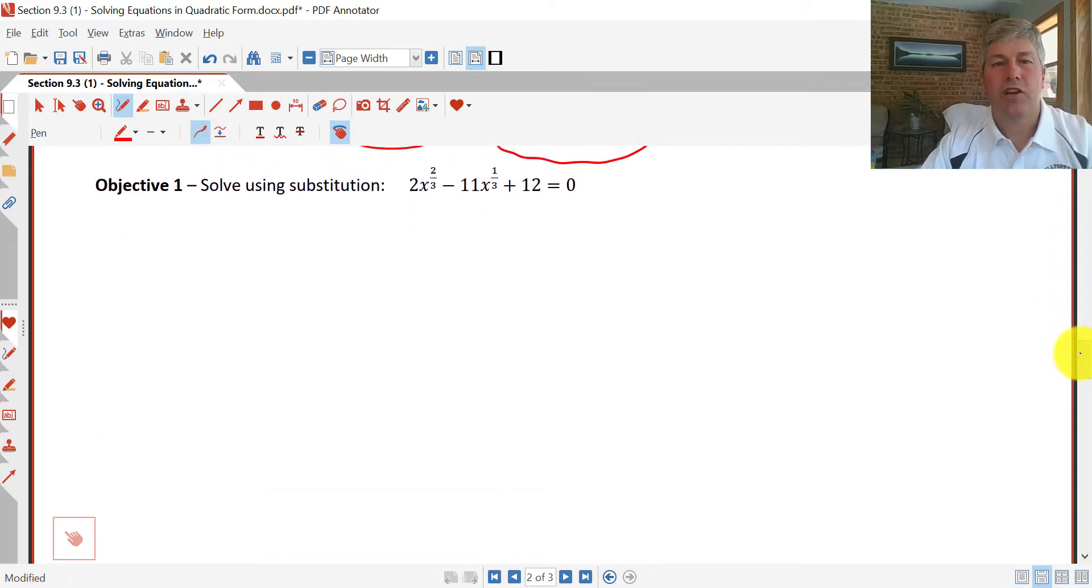Second sample problem, a little bit more challenging because we've got these fractional exponents. So this looks like it could be a little bit more difficult. But again, following our rule of thumb, we're going to let u equal, work with our linear term here. So let's let u = x^(1/3). That's going to work out well for us, because x^(2/3) here, if u is x^(1/3),